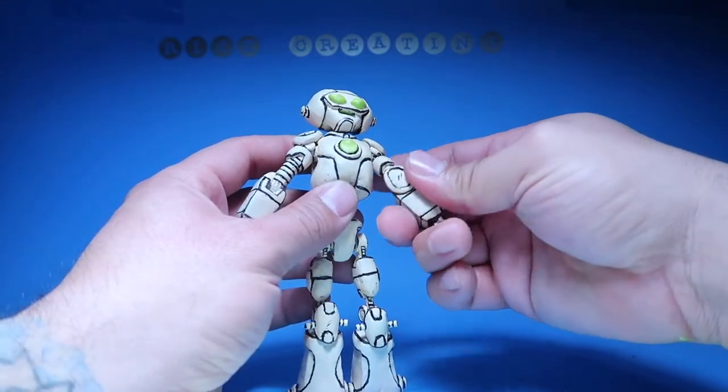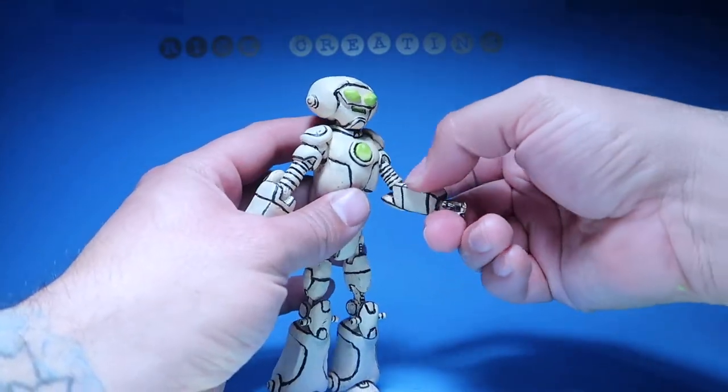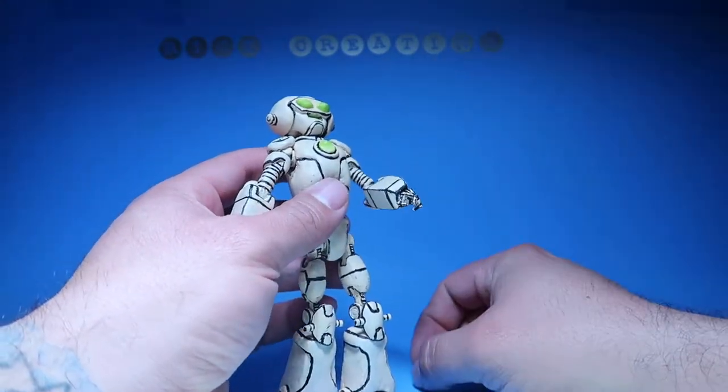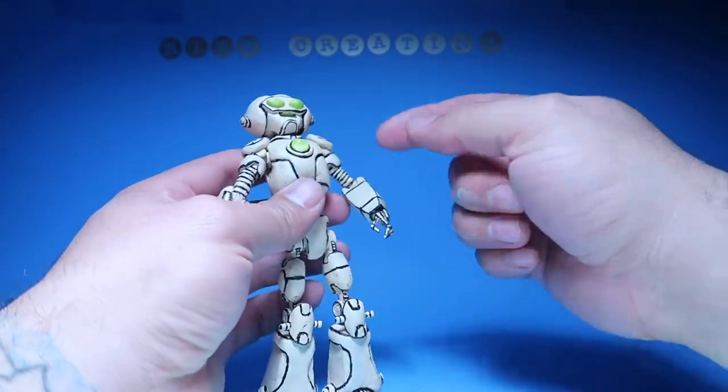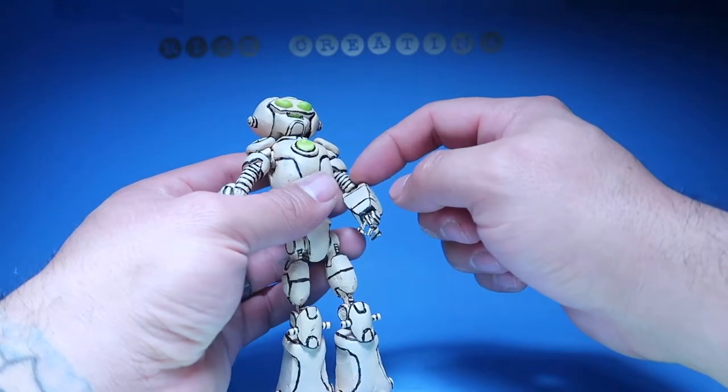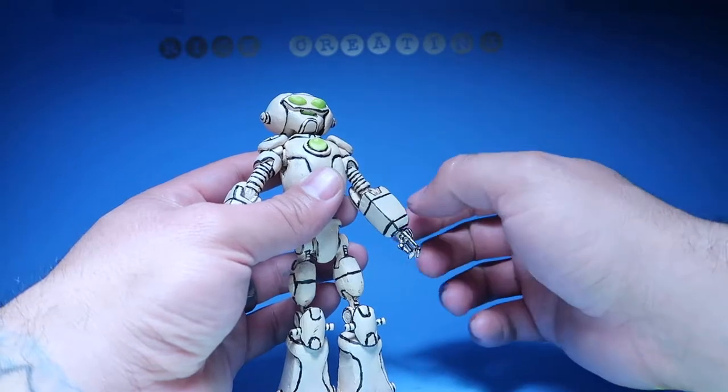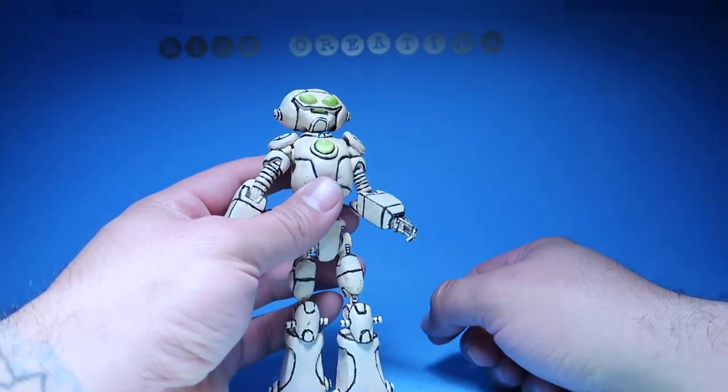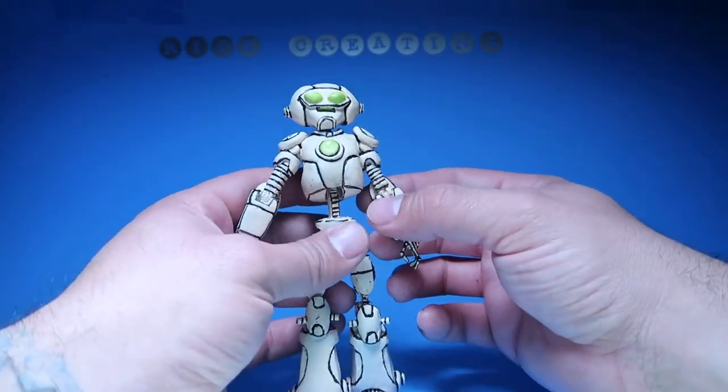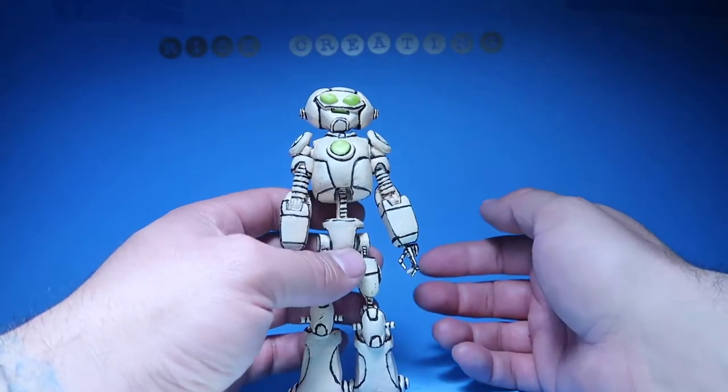It does have a rotation here in the bicep. It does bend that much. It is kind of hindered a little bit just because of the thickness of this. The original figure that I used, it had super thin arms, so I couldn't get that much articulation in there if I was to do it the way I did it.